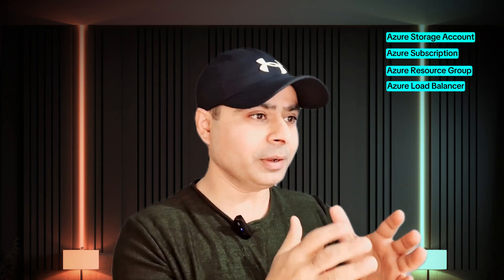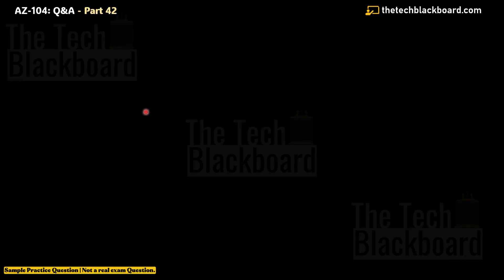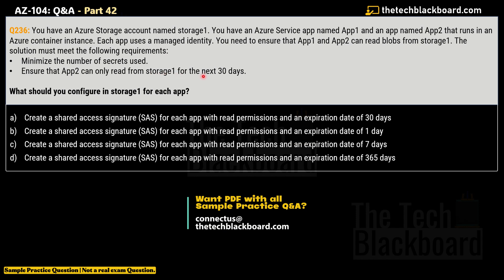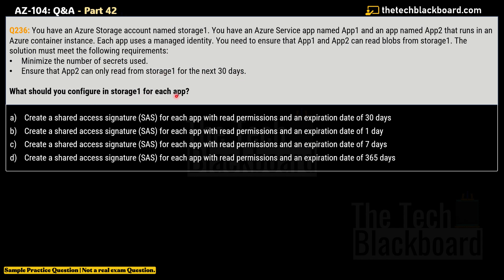Let's begin part 42 of the AZ-104 Q&A series with question number 236 — a great question to understand Azure storage account and related concepts. You have an Azure storage account named Storage 1, an Azure App Service named App 1, and an app named App 2 that runs in an Azure Container Instance. Each app uses a managed identity, and you need to ensure that App 1 and App 2 can read blobs from Storage 1. The solution must minimize the number of secrets used and ensure that App 2 can only read from Storage 1 for the next 30 days. What should you configure on Storage 1 for each app?